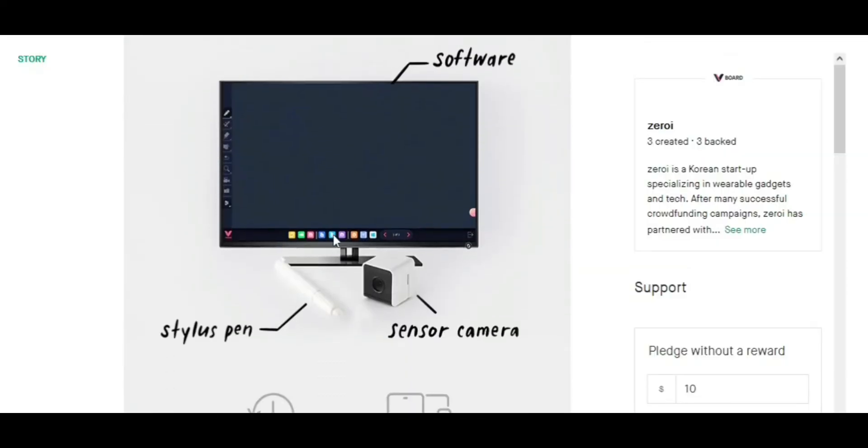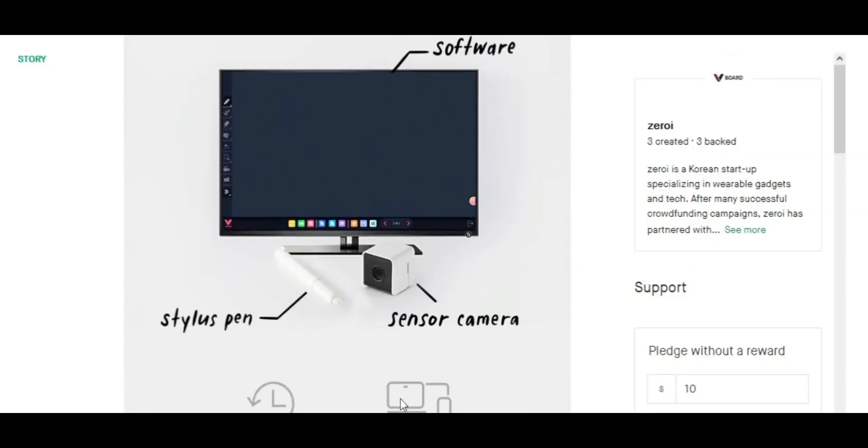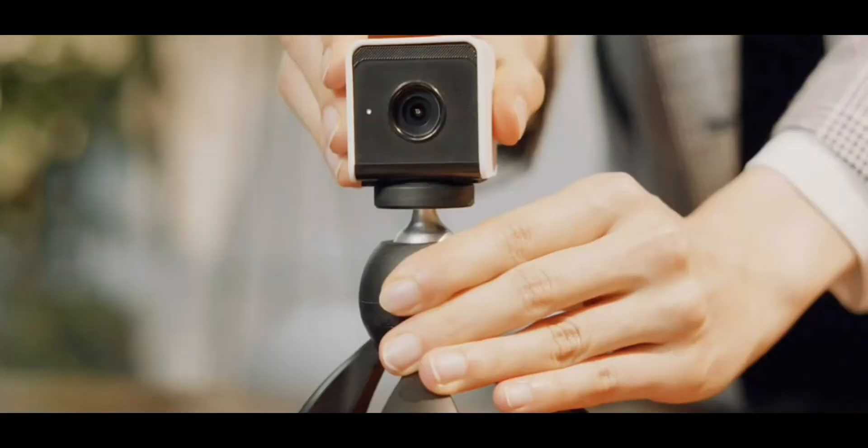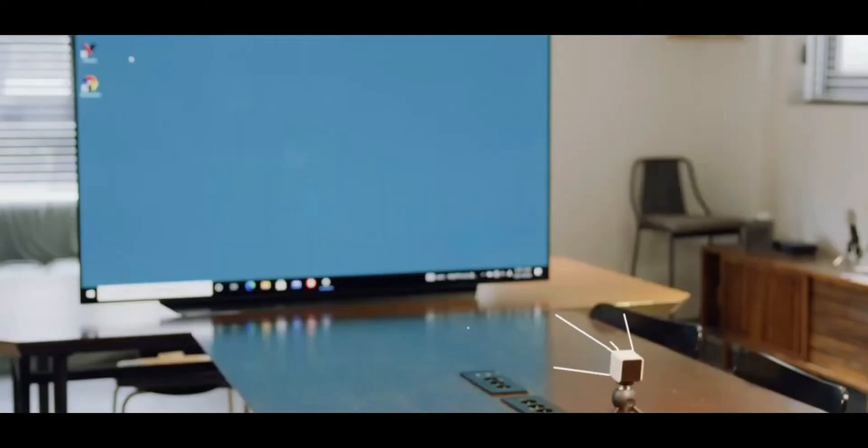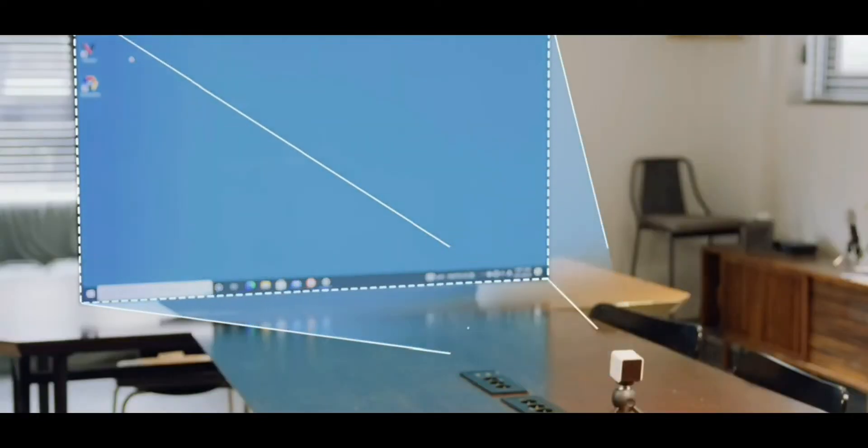It requires three parts: a computer running its software, a camera with all the sensors it needs, and a stylus pen. Apparently, it automatically calibrates itself to any display you're using. It even works with projectors.